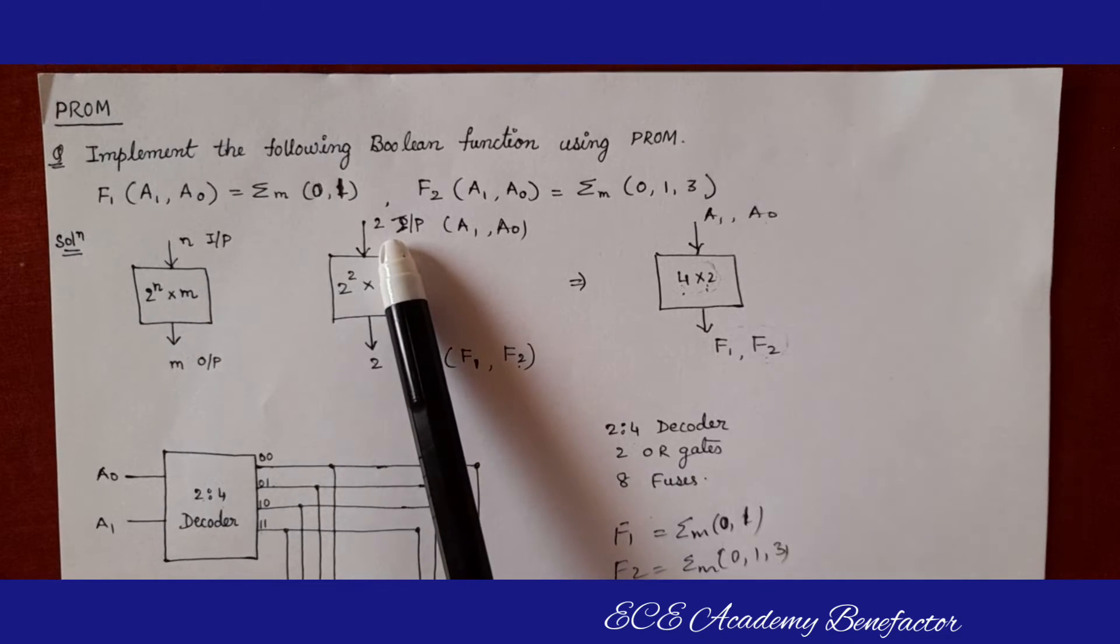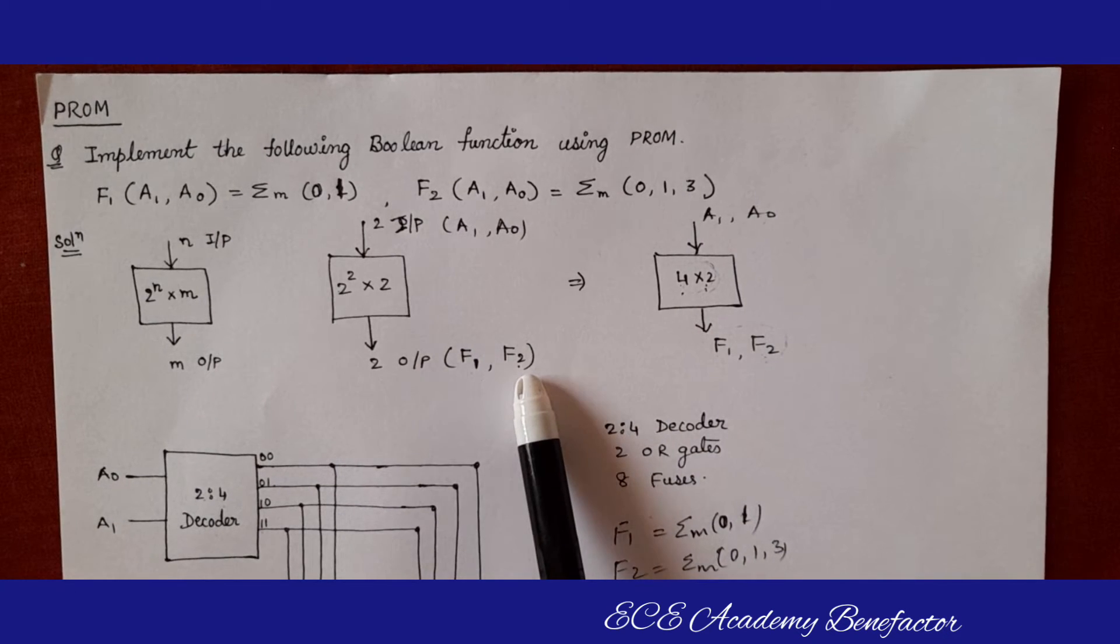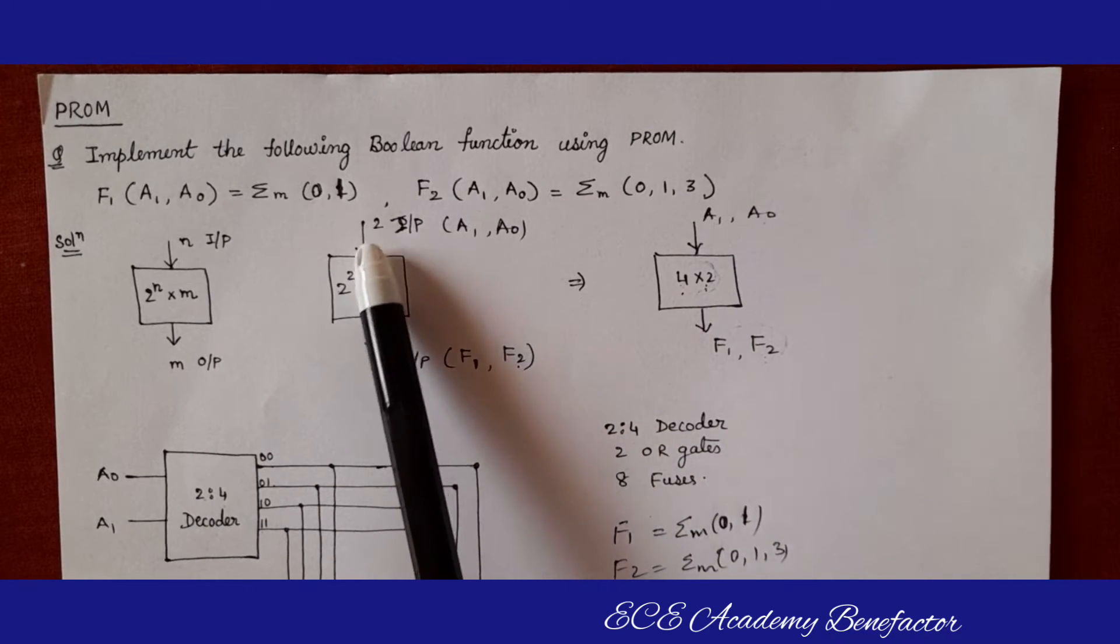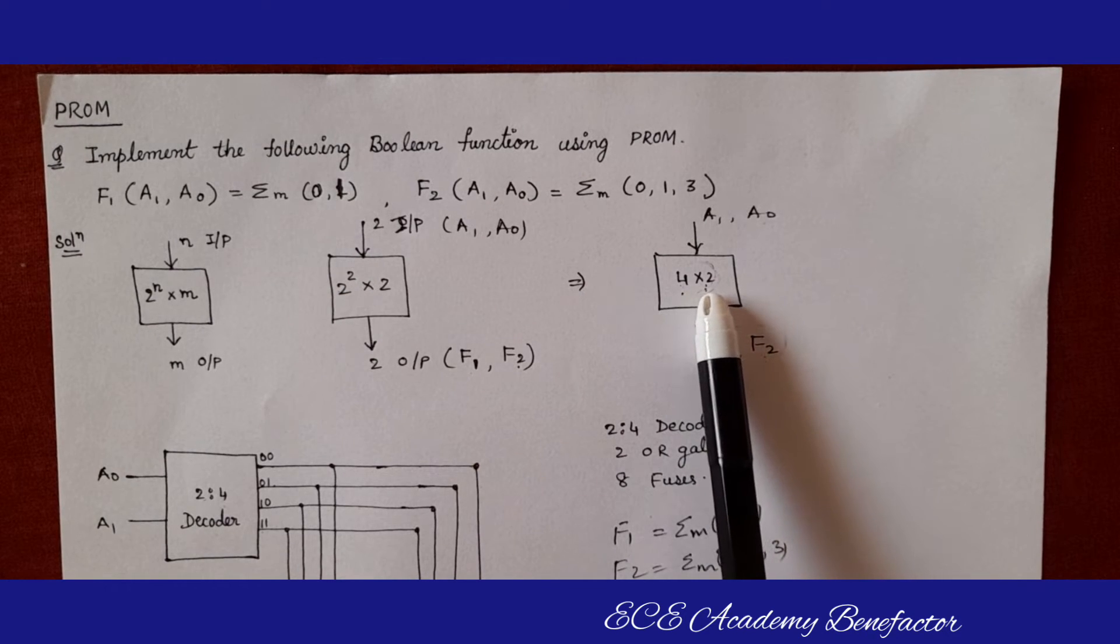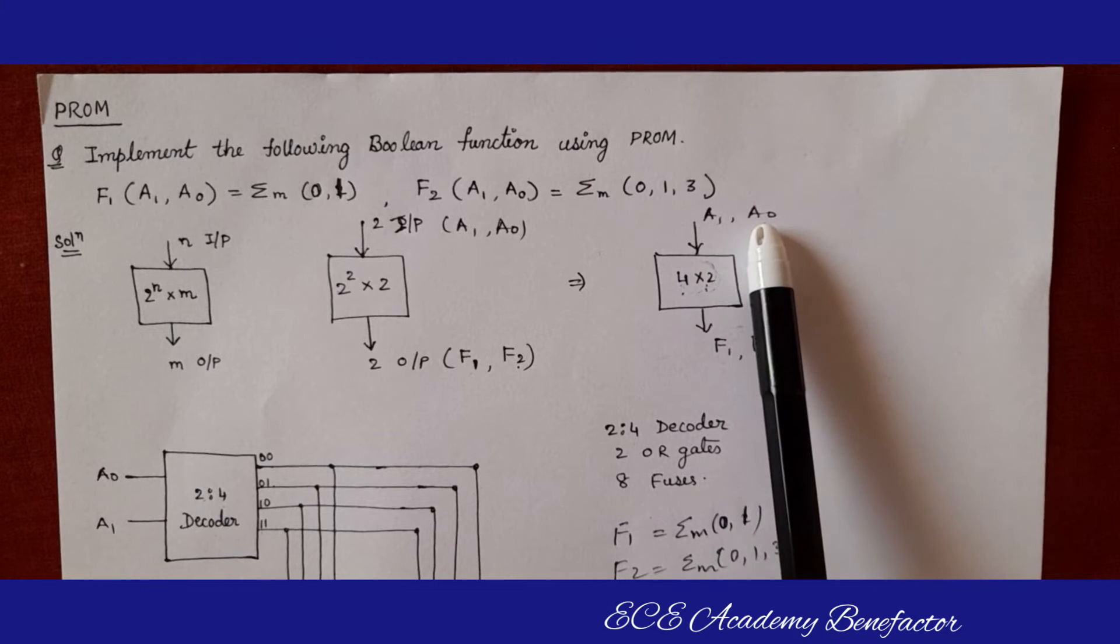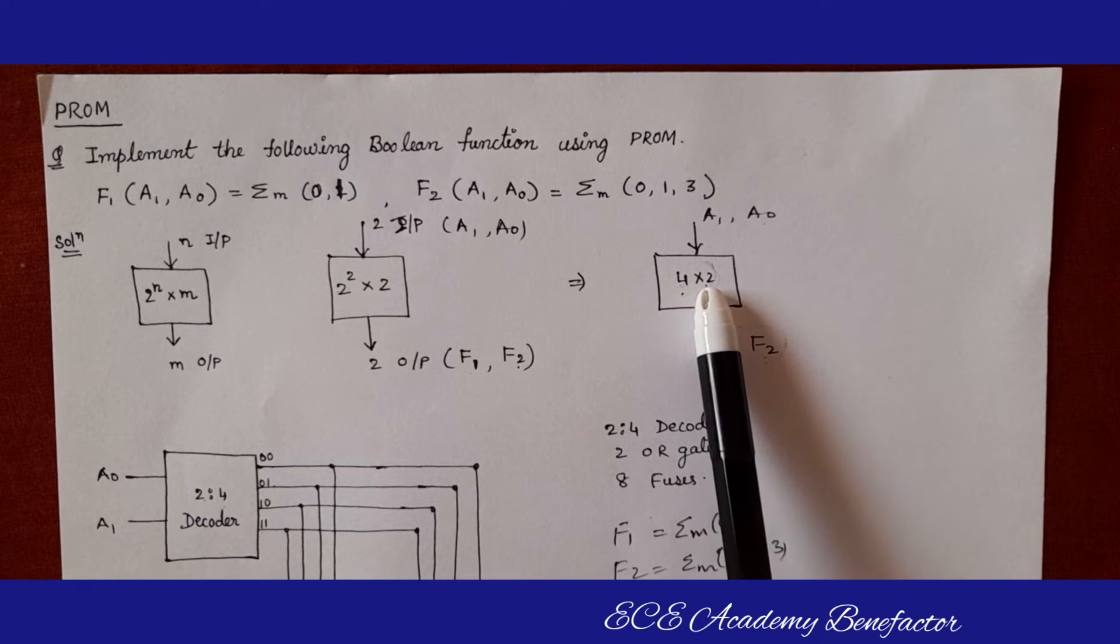Here two inputs are a1, a0 and two outputs are f1, f2. So it will be written as 2 to the power 2 cross 2, that is 4 cross 2 PROM. A1, a0 inputs, f1, f2 outputs, 4 cross 2 PROM.